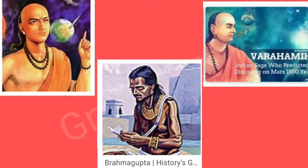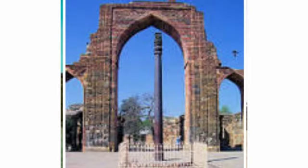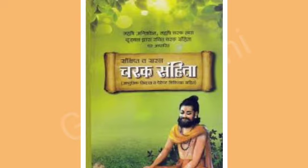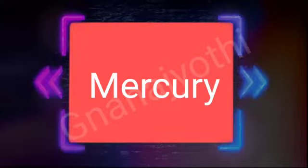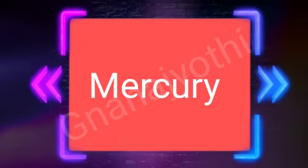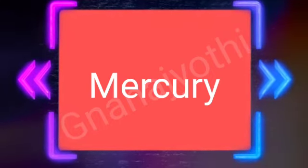Aryabhatta, Brahma Gupta, and Varaha Mihira were famous scientists and mathematicians. Metallurgy achieved great progress during the Gupta period; the iron pillar at Mehrauli, Delhi, is an example of this progress. Vagabhatta of the Gupta times prepared a summary of the famous work Charakasamhita, known as Ashtangahridayasamhita. The credit for using mercury as a medicine for the first time goes to doctors of India.